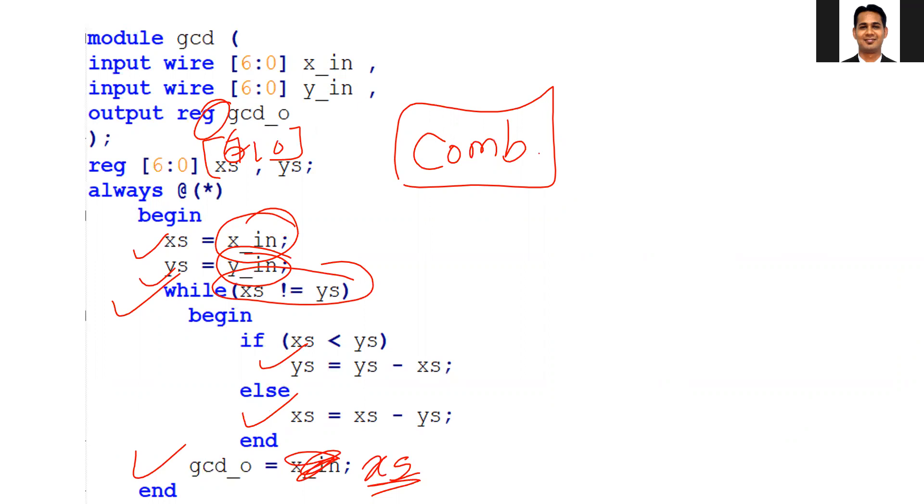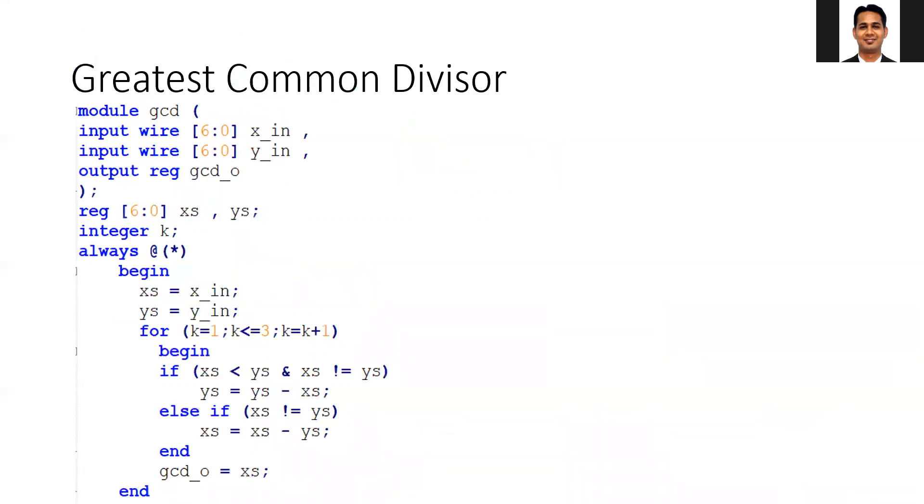Another possible solution is to replace the while loop with the for loop. Here, you are implementing the circuit as a combinational circuit. Instead of a while loop, you are using a for loop. There are a couple of mistakes - this should be six down to zero.